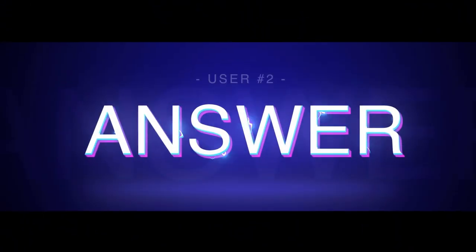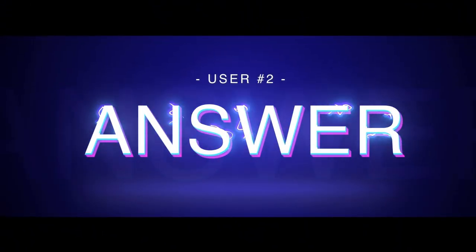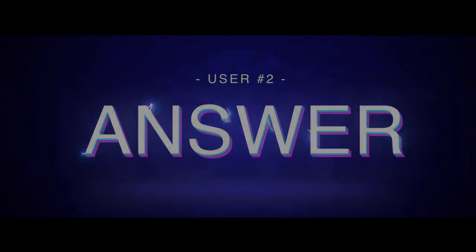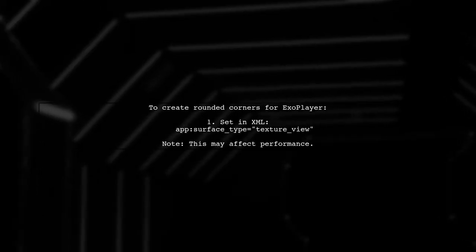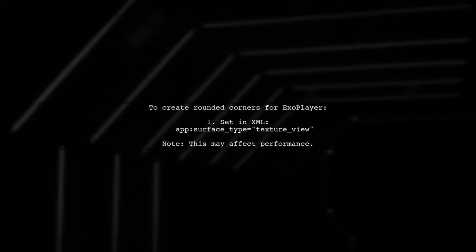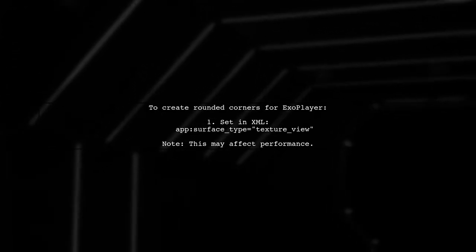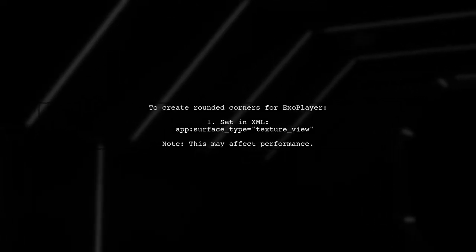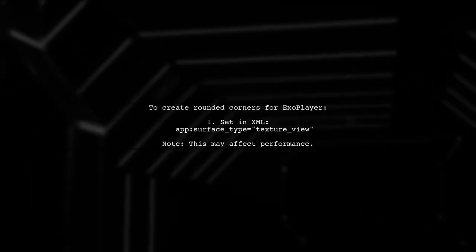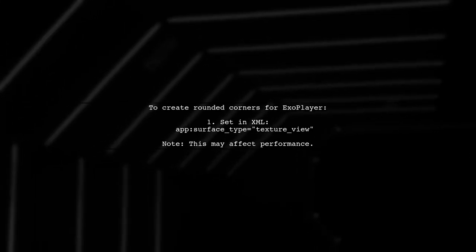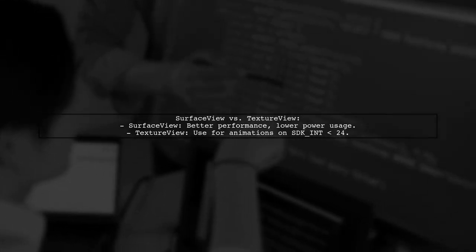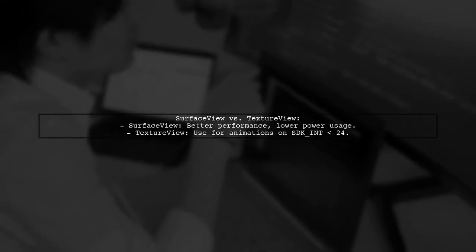Let's now look at another user-suggested answer. To display ExoPlayer with rounded corners, set the surface type to texture view in your layout XML. However, be aware that this may impact performance and battery life. Using surface view is generally better for video playback due to lower power consumption and smoother frame timing. Use texture view only if necessary, especially for animations on older Android versions.